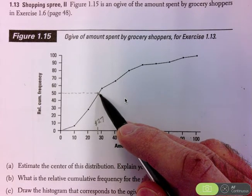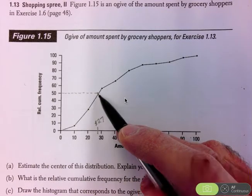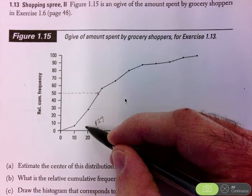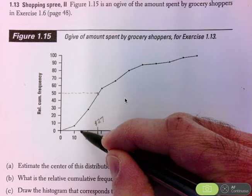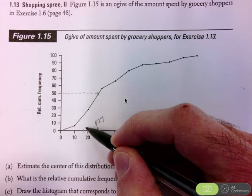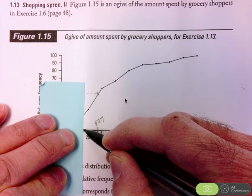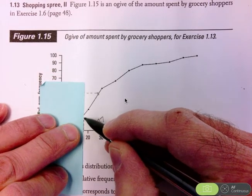So in part B, you're working the other direction. It says, what is the relative cumulative frequency for a shopper who spent $17? So now I'm going to go the other way. Here's $15. So this is approximately $17. So I'm just going to draw up onto my ogive here. There it is.